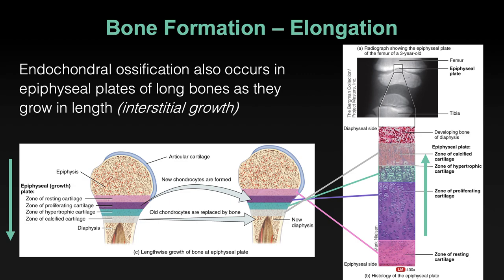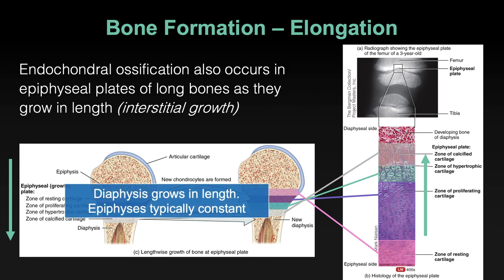What does this say for how long bones grow in length? We add new bone in the gray region, and those cells come from the pink region. New bone is added to the gray region and pushes the rest of the layers up, so the diaphysis grows in length. The epiphyses on the end just move up as the central column grows — the diaphysis elongates while the epiphyses don't really change in size or shape.